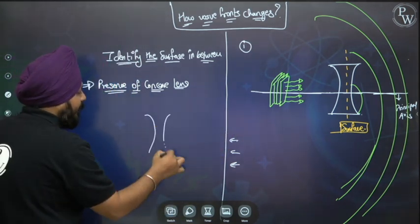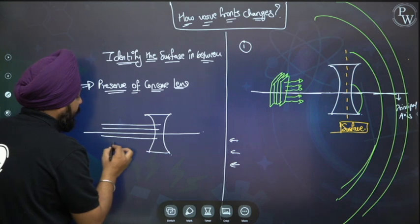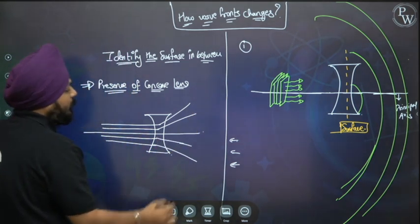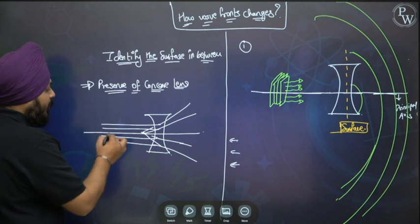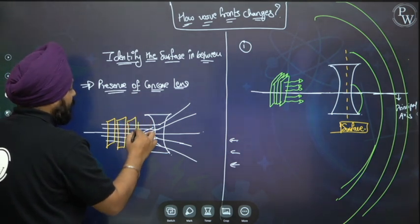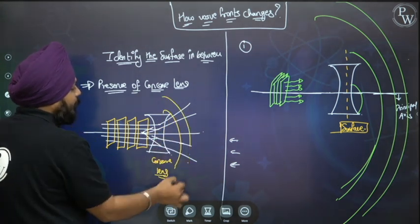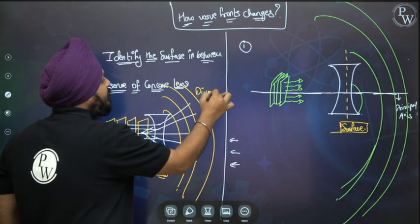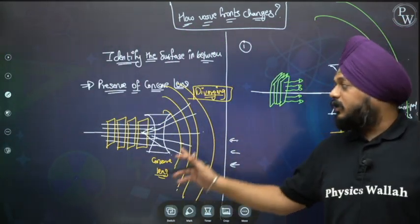Representing the same thing as a ray diagram — the rays were coming and after refraction they diverged. The plane wavefronts traveling along the principal axis, due to the presence of the concave lens, got converted into spherical wavefronts that are also diverging, not converging. This is how things happen with a concave lens.